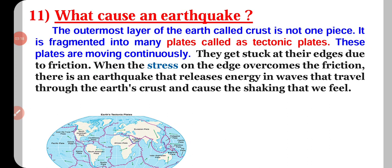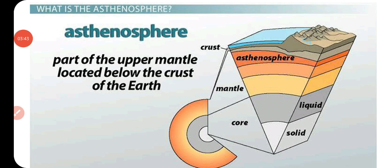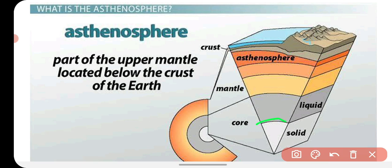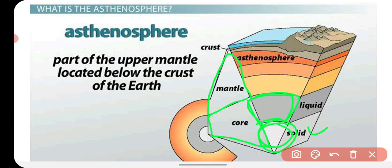And these tectonic plates are moving continuously. You know that our earth has been divided into three layers. Jo innermost layer hoti hai, use core kehte hain. Jo central part hai woh solid hai, lekin uske upar core ka second part liquid hai. Core ke upar jo bahut badi layer hai, use mantle bolte hain. Aur sabse upar ki jo layer hoti hai, use crust bolte hain. So, earth is divided into three layers: core, mantle, and crust.